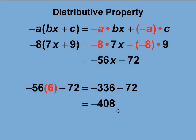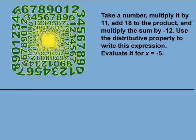Let's look at another example. Take a number, multiply it by 11, add 18 to the product, and multiply the sum by negative 12. Use the distributive property to write this expression and evaluate it for x equals negative 5. This is an example of converting words into an algebraic expression.